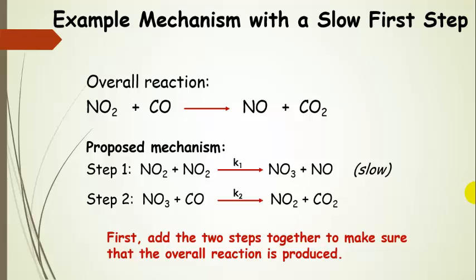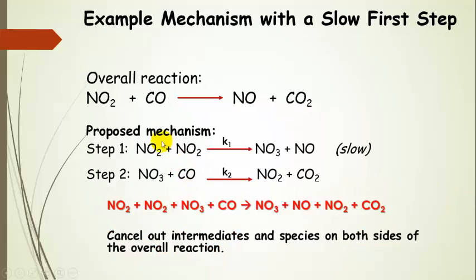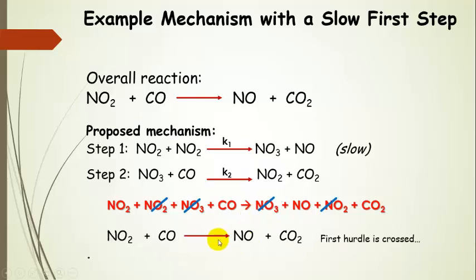The first thing we want to do is make sure that the proposed mechanism steps add up to the overall reaction. We add the two chemical equations together — combining all reactants and all products — and then cancel out intermediates, meaning species that show up on both sides. One nitrogen dioxide and nitrogen trioxide cancel out, and what remains matches the overall reaction. So the first hurdle is crossed.